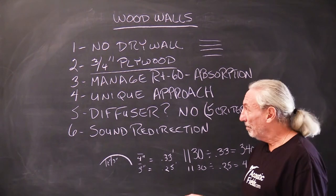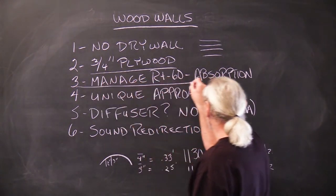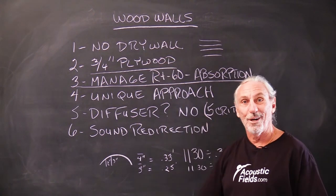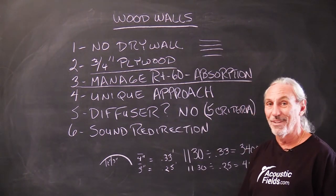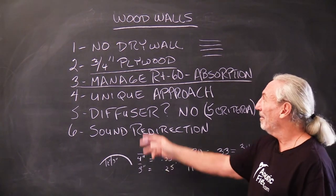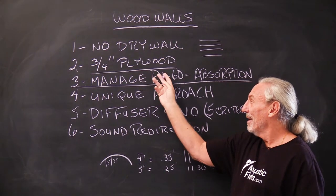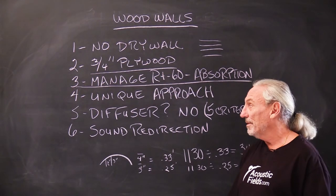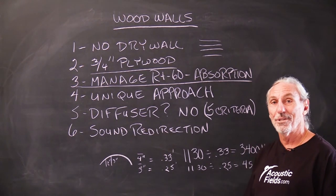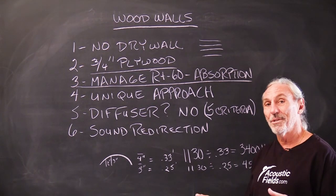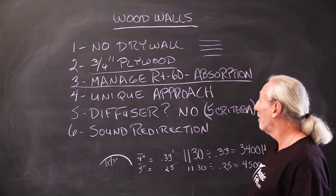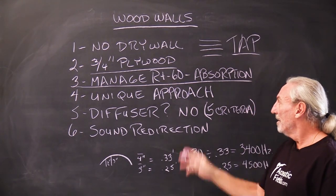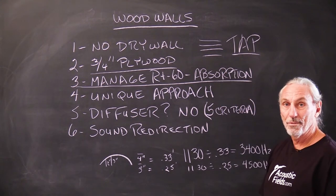Of course, then the counter argument is, well, how do you manage the RT60 or the reverberation times? Well, you have the same problem with drywall. Drywall's absorption coefficients are almost non-existent. So you still have to manage RT60 with drywall. You have to manage a little bit more RT60 with plywood because it's a little harder material. But you're going to manage it anyway through the application of the type of material, the amount, and which surface area you put it on. Remember our acronym? TAP. Type, amount, and position. So we're always going to use absorption to manage reverberation times.